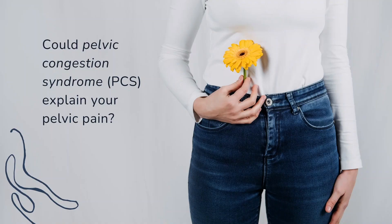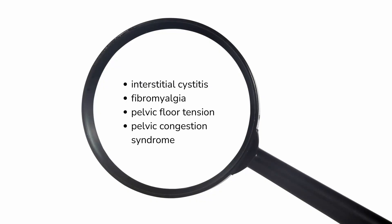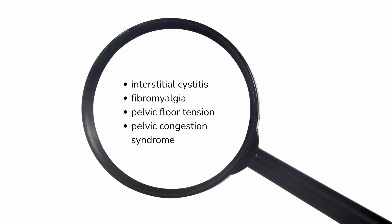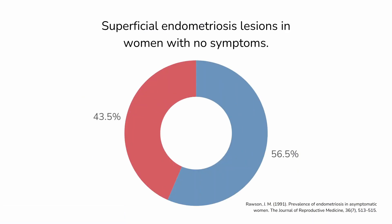It is entirely possible to have one of those conditions as the main cause of your pain or other symptoms, but also to have superficial endometriosis lesions. And that's because superficial endometriosis lesions may be a lot more common than we realized. For example, a 1991 study looked at women undergoing surgery for tubal sterilization and found that 43% of them had superficial lesions despite having no symptoms. There hasn't been a lot of definitive data since then, so we don't know for sure that it's 43% of healthy women who have superficial lesions, but there is a growing consensus that it's a fair number of women.